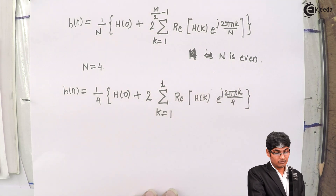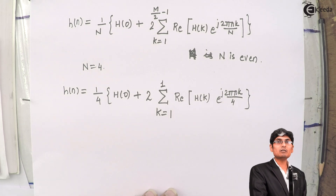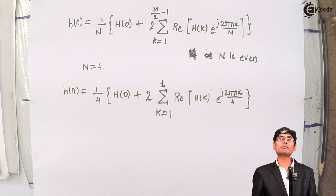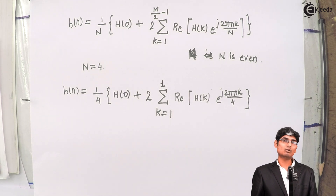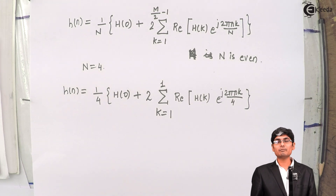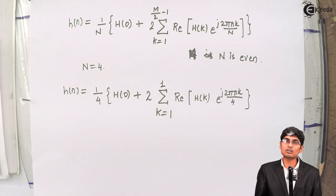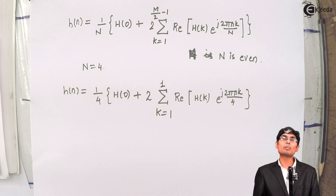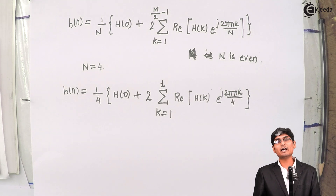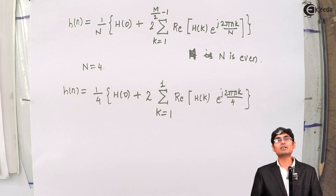To summarize, there are three basic steps when designing an FIR filter using the frequency sampling method. First, obtain hd of e raised to j omega. Second, apply sampling on omega — that is, set omega equals 2πk/N where N is the order of the filter — to get hd of k. Third, apply IDFT on hd of k to get h of n. To ensure h of n is always real, apply the appropriate condition depending on whether N is even or odd.